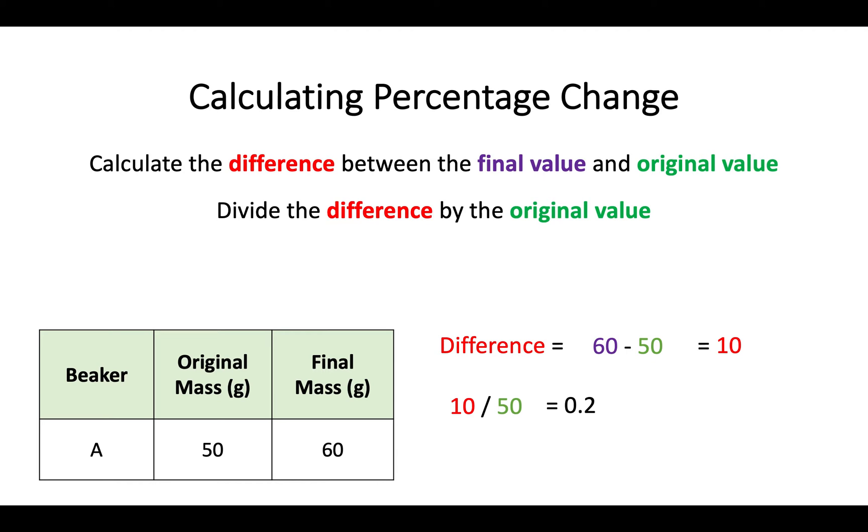So we're almost there. Once we have this value of 0.2, what you then do is you would multiply this number by 100 in order to get your percentage change. So 0.2 multiplied by 100 gives you an answer of 20 percent. And again because it's a positive value I would add a plus in here or say an increase of 20 percent. That means that from the original mass in this example to the final mass there has been a percentage increase of 20 percent.